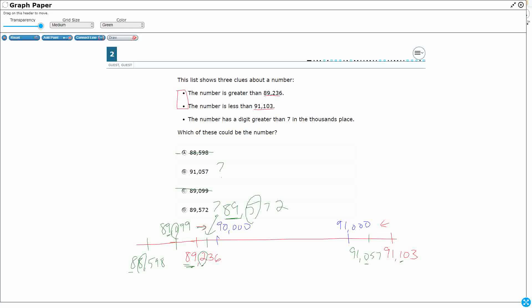So 91,057. And I've got 89,572. Those are my two different options. I've eliminated A. I've eliminated C. Simply because they're either too big or they're too small. In this case, they're actually both too small.